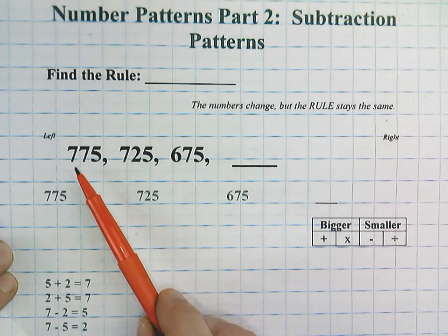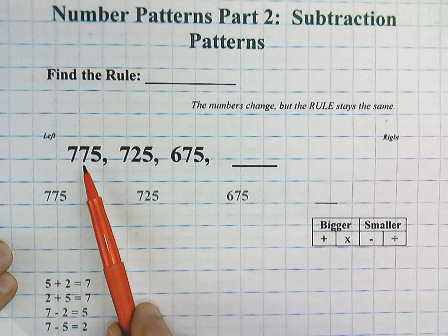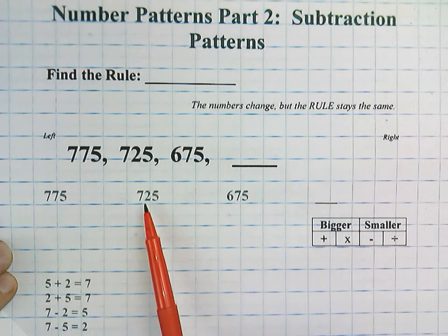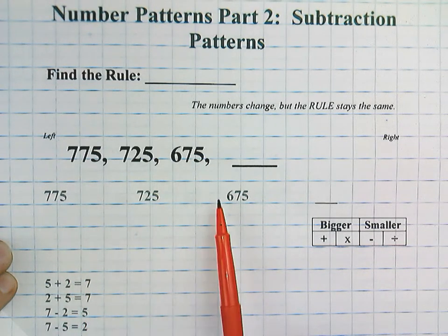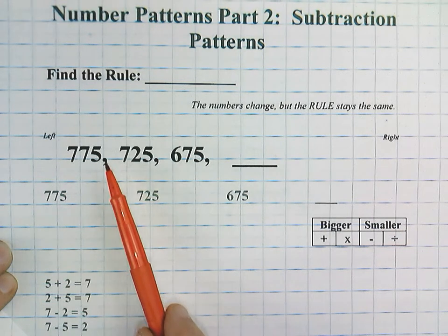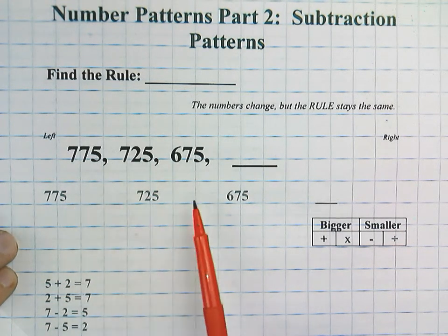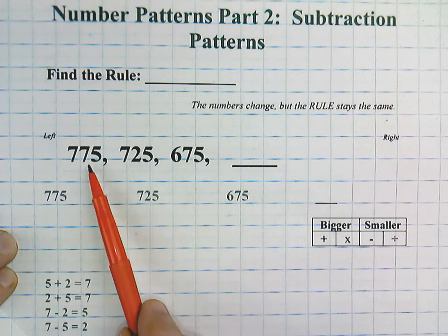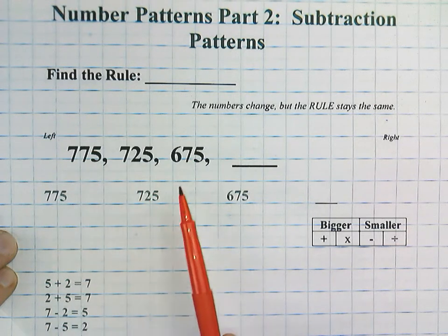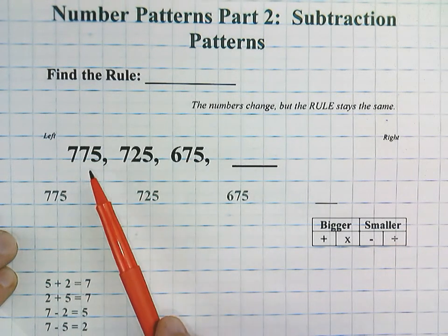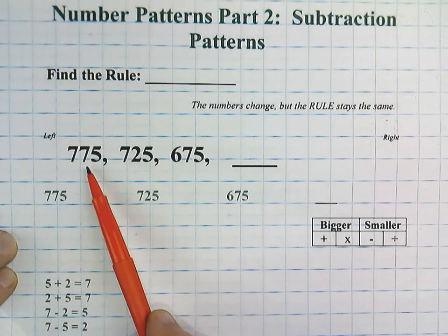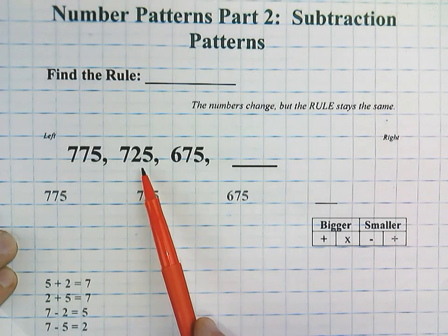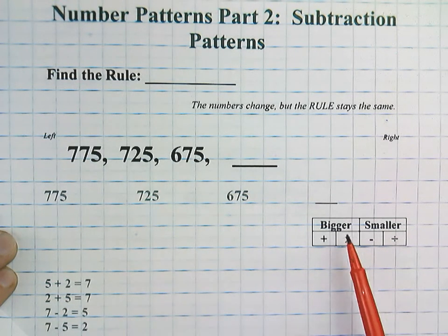So what we did here is we took these numbers and we stretched them out so that we can show the steps that would be taking place, but a lot of times you can do it with mental math, but we're going to show those steps down here today. You see we have 775, 725, and 675. So 775 is the first number, and then it goes to 725. It's not getting bigger.